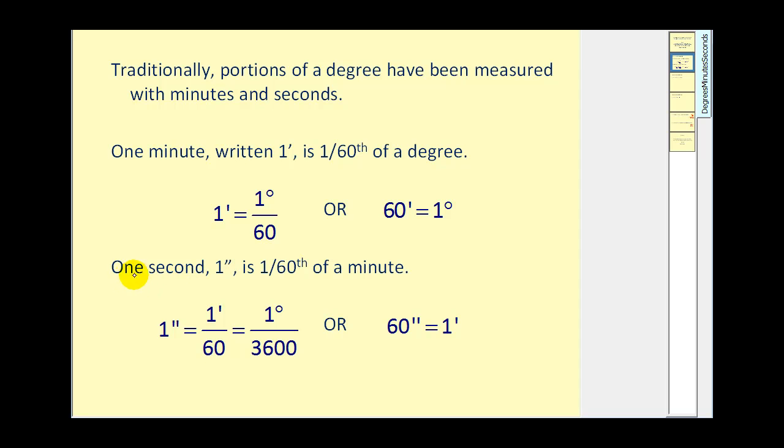One second is 1/60th of a minute. We can say that 1 second equals 1 minute divided by 60. We can also say that it's 1/3600th of a degree, or 60 seconds equals 1 minute.